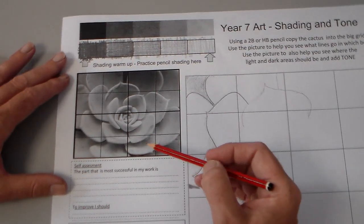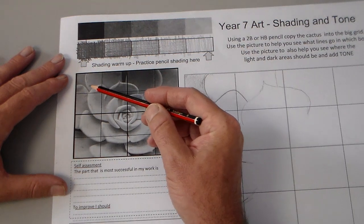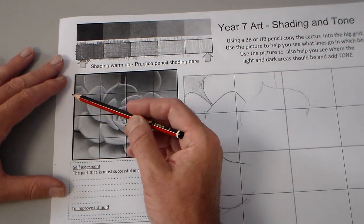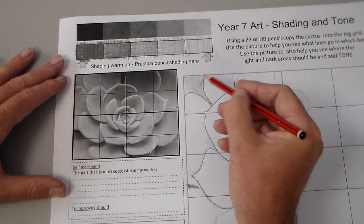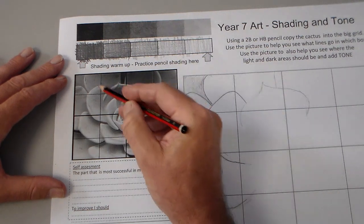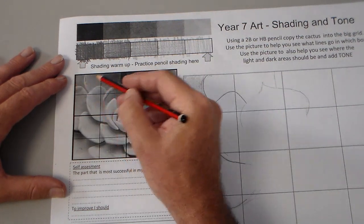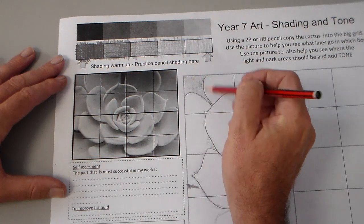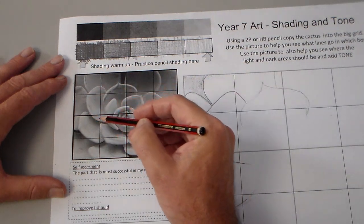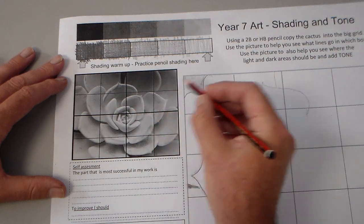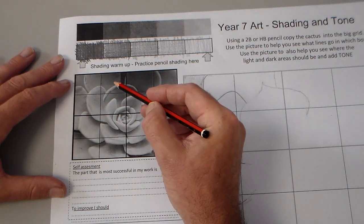So we can see here that what I've done is I've taken one square at a time on the grid. If we look at this square here, I've added these lines, even finding the center points of these lines to add the detail of the petals of the cactus flower, and then look at areas of shading.